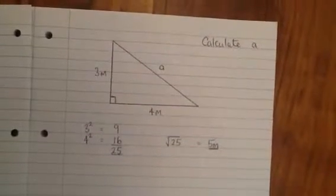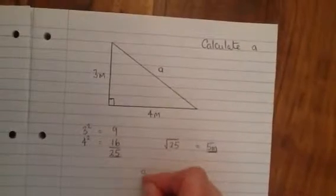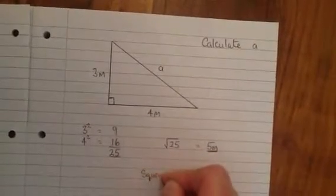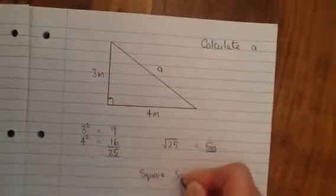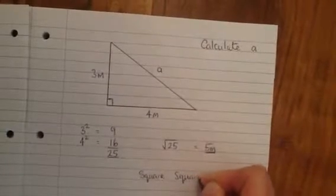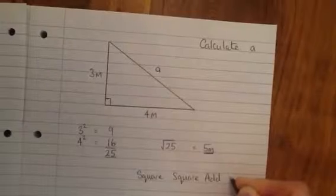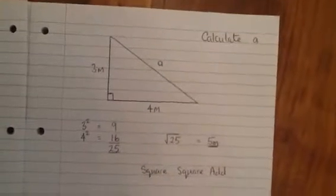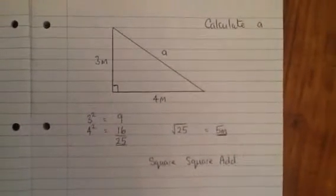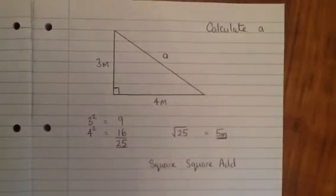The rule you need to remember for the long side is that you square each side, so it's square and square the other side, then you add them together, and then eventually you square root. So it's square, square, add to find the longest side, before you square root.